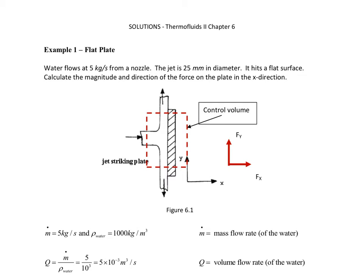We are told that water flows at 5 kilograms per second from a nozzle. The jet is 25 millimeters in diameter, hits a flat plate. You are supposed to calculate the direction and magnitude of the force on the plate in the X direction.